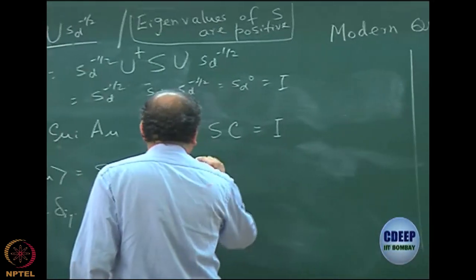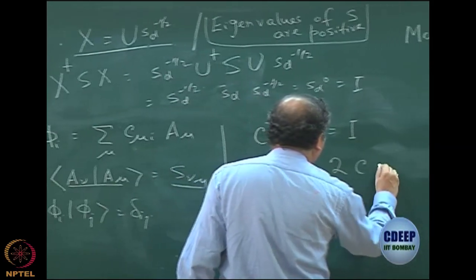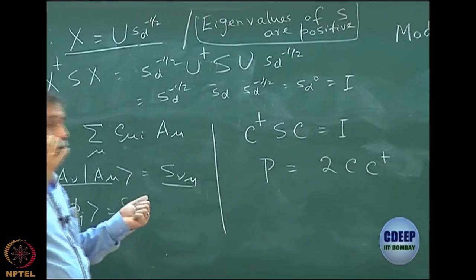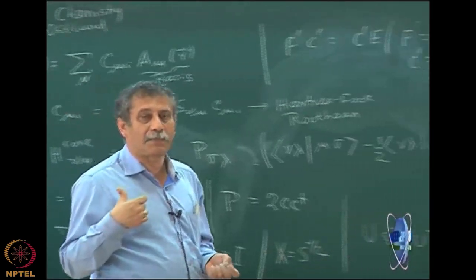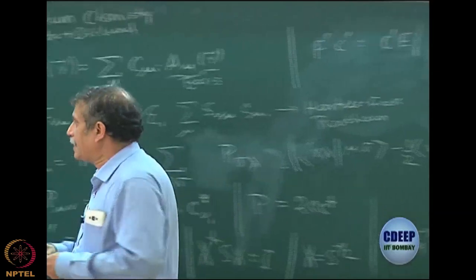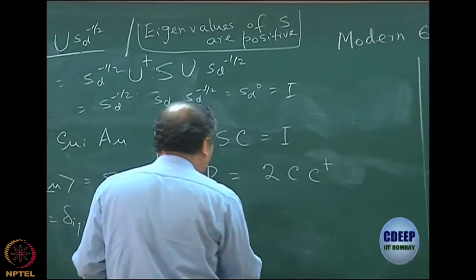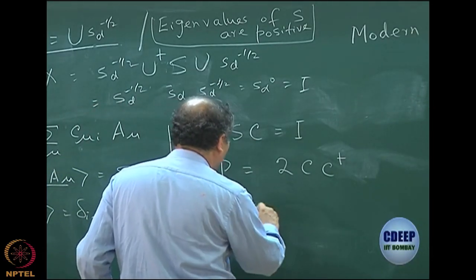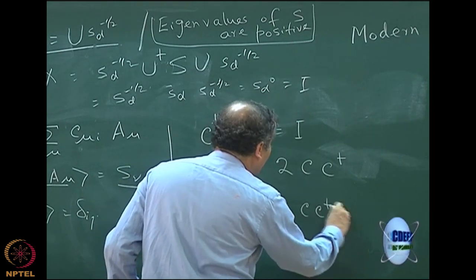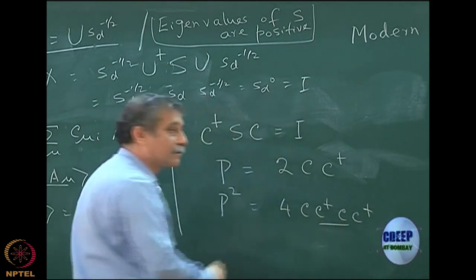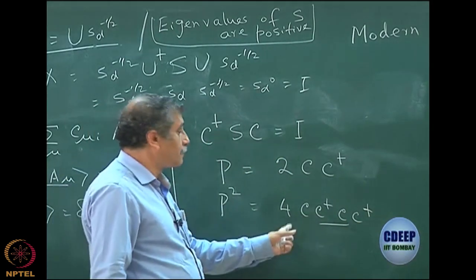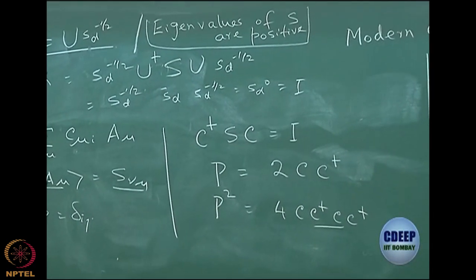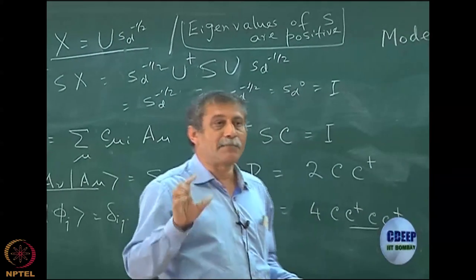If that is so, then look at the P matrix. P is 2CC†. You may think it is a projection operator because of the name P, but it is not actually, because projection operators are supposed to be idempotent. You can quickly see this is not idempotent. P is, of course, a Hermitian matrix — that is very clear — but P² is not equal to P. If you compute P², it becomes 4CC†CC†, and of course this is not 1. Even if it were, the factor 4 would remain, so P² would not equal P because of the factor 2. So it is quite clearly not an idempotent matrix.